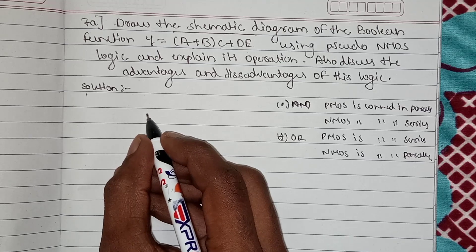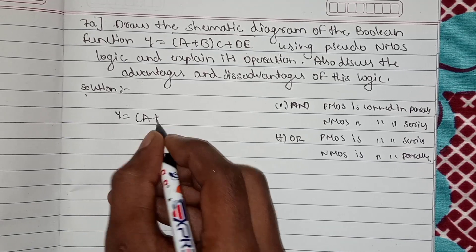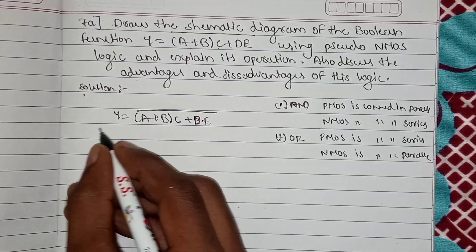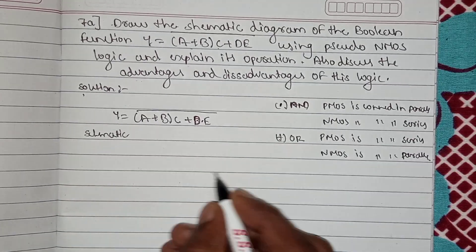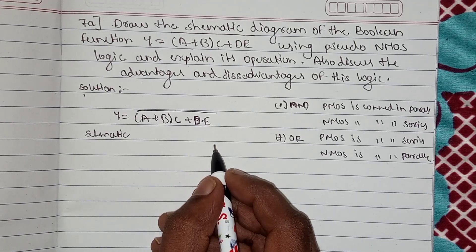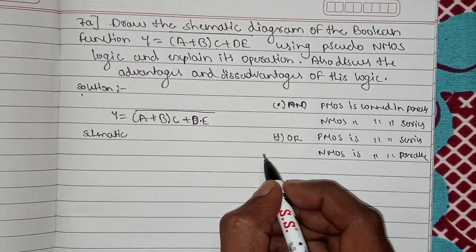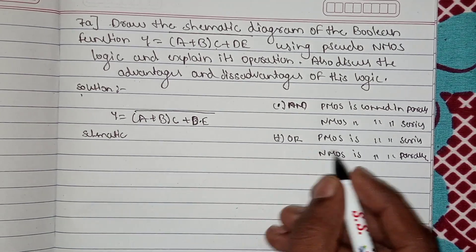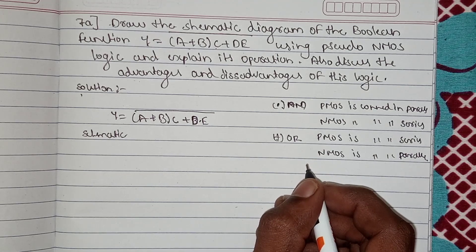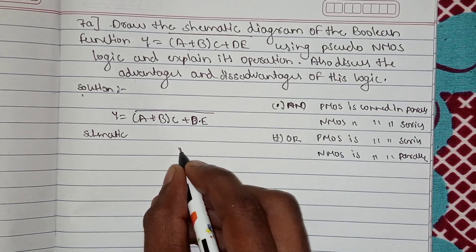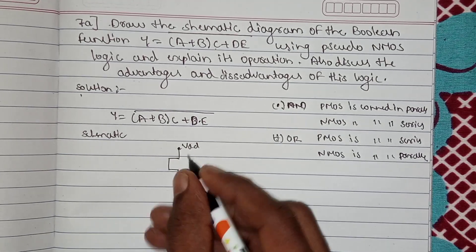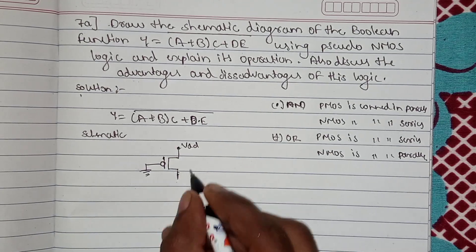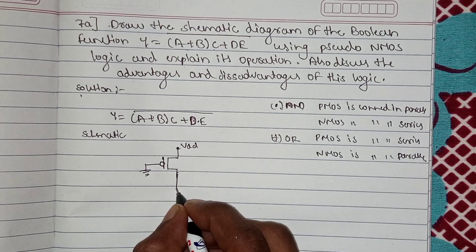The schematic for the pseudo NMOS logic of the boolean equation Y = A + B(C + D)E̅. One thing to remember while drawing pseudo NMOS logic: one PMOS transistor of the pull-up network is directly connected to ground. This becomes the pull-up network.